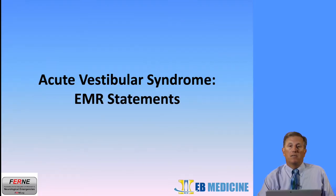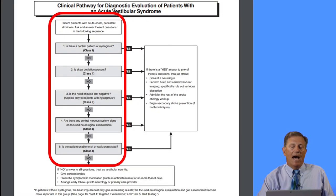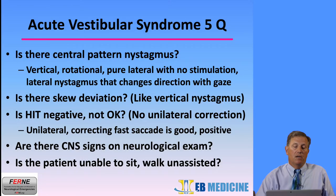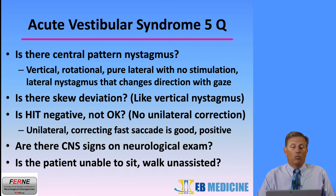In acute vestibular syndrome, let's look at our electronic medical record statements. We have five different findings that are in the red rectangle in the clinical pathway. Our first question: Is there central pattern nystagmus? You can say in the medical record: vertical, rotational, pure lateral with no stimulation, or lateral nystagmus that changes direction with gaze.